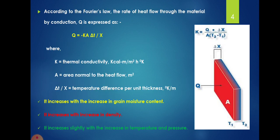This is more specifically shown in this diagram. A material is shown having thickness delta x, with the temperature of one face as T1 and the other face as T2. The quantity q is the heat flow through the area, and the direction of heat flow is perpendicular to the cross section of the material. According to Fourier's law of heat conduction, the rate of heat flow through the material is expressed as follows.